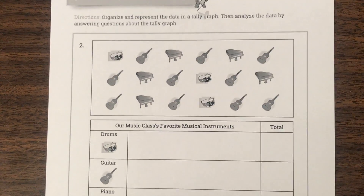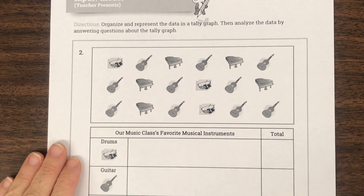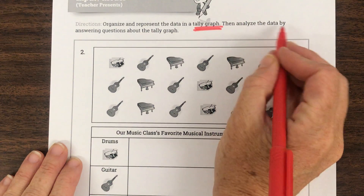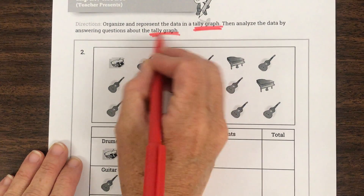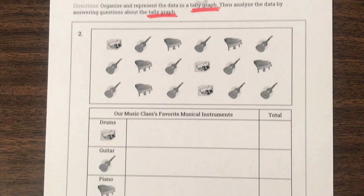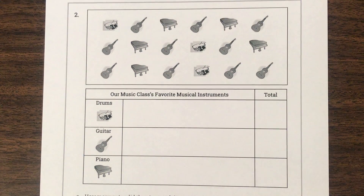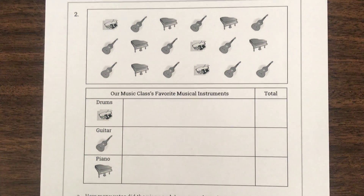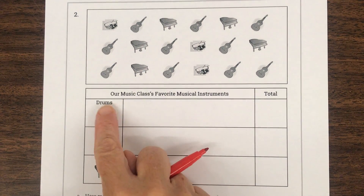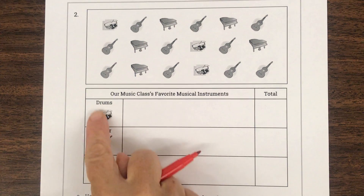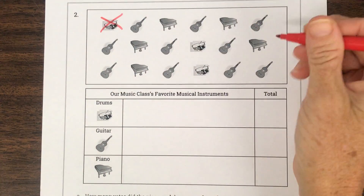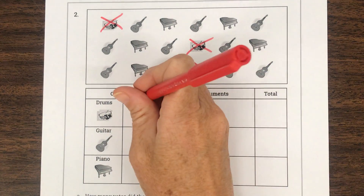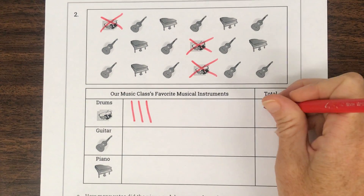Here's my next one. The directions say: organize and represent the data in a tally graph, then analyze the data by answering questions. This one wants a tally graph. The title is Our Music Class's Favorite Musical Instruments — drums, guitar, or piano. How many drums are there? One, two, three. So let's draw three tally marks.